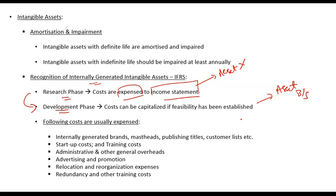Under US GAAP, most of these costs are required to be expensed. So US GAAP expenses research as well as most of the development costs — they are not recorded as an asset. But under IFRS, you expense research costs and you capitalize development costs.